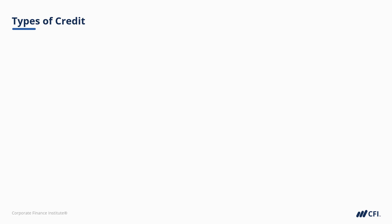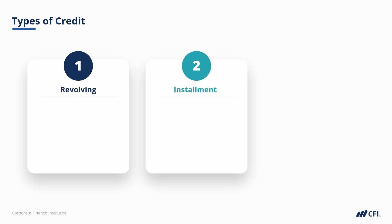Broadly speaking, there are three main types of credit: revolving, installment, and open credit.